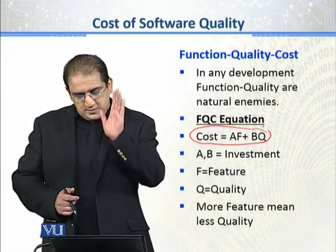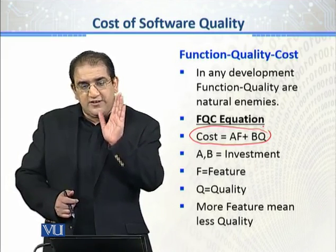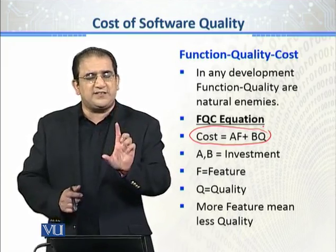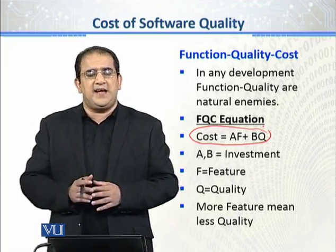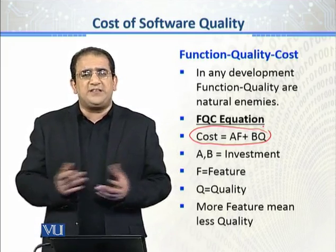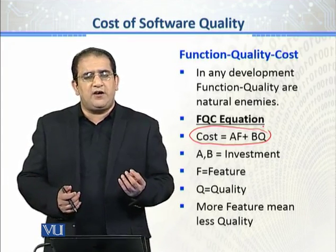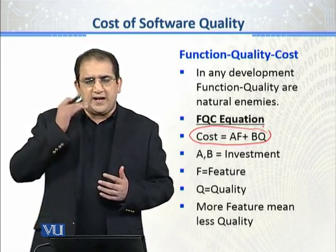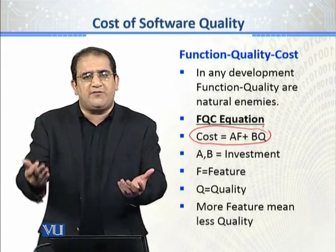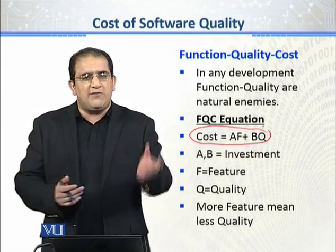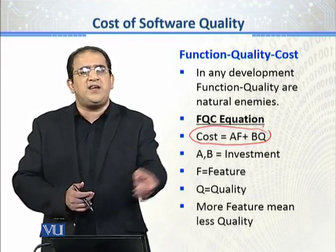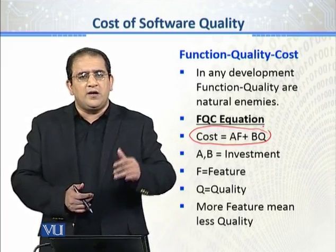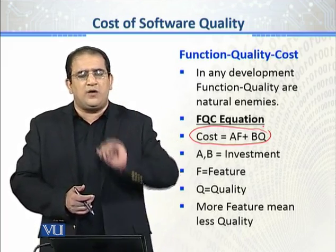If you add more features, then you will have less quality. سمجھنے کے لیے: جب آپ software کی budgeting کرتے ہیں، for example ایک project ایک لاکھ dollars کا ہے — تو آپ directly وہاں نہیں پہنچتے، آپ اسے break up کرتے ہیں — development cost اتنی ہے، project management کی cost اتنی ہے، QA کی cost اتنی ہے، کچھ profit ہے، اور پھر ہم x amount یعنی ایک لاکھ dollars پر پہنچتے ہیں۔